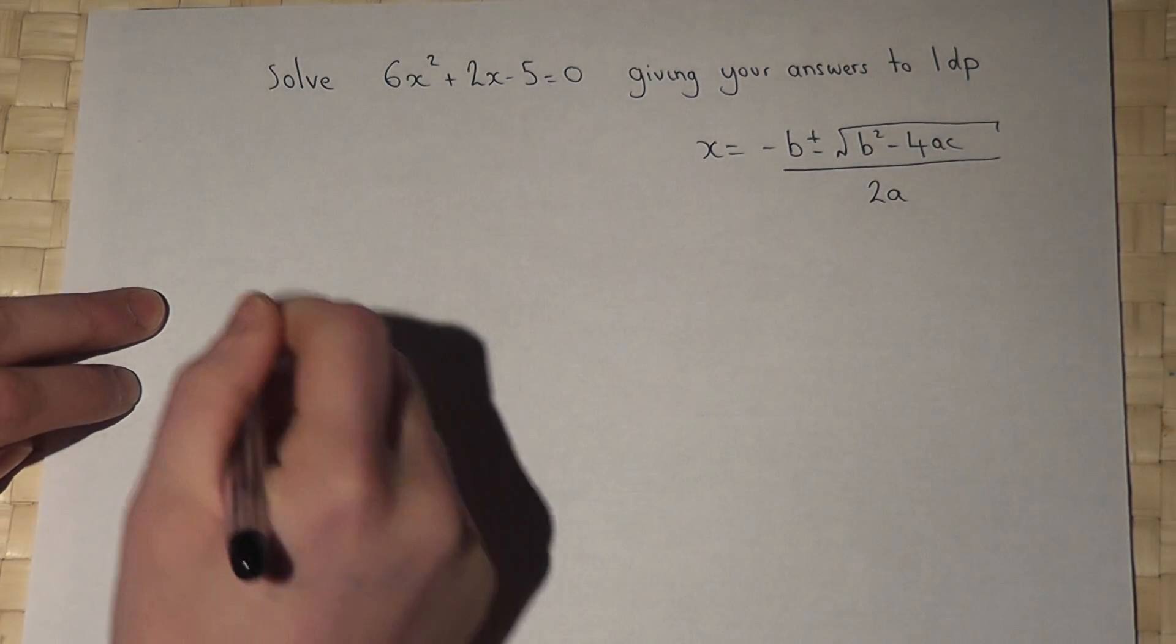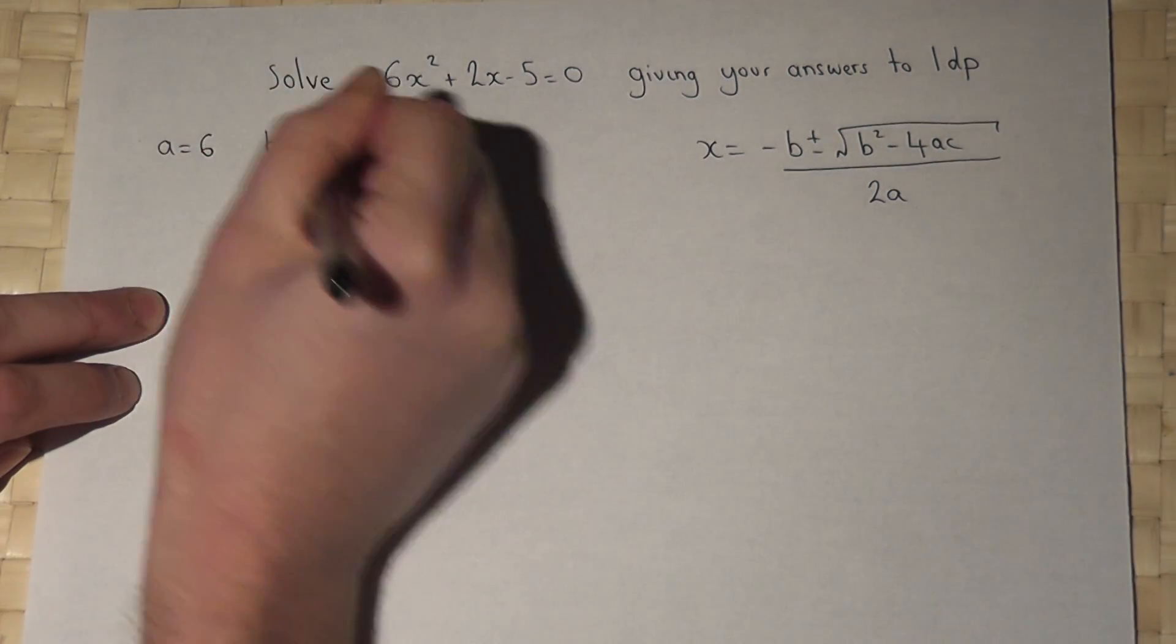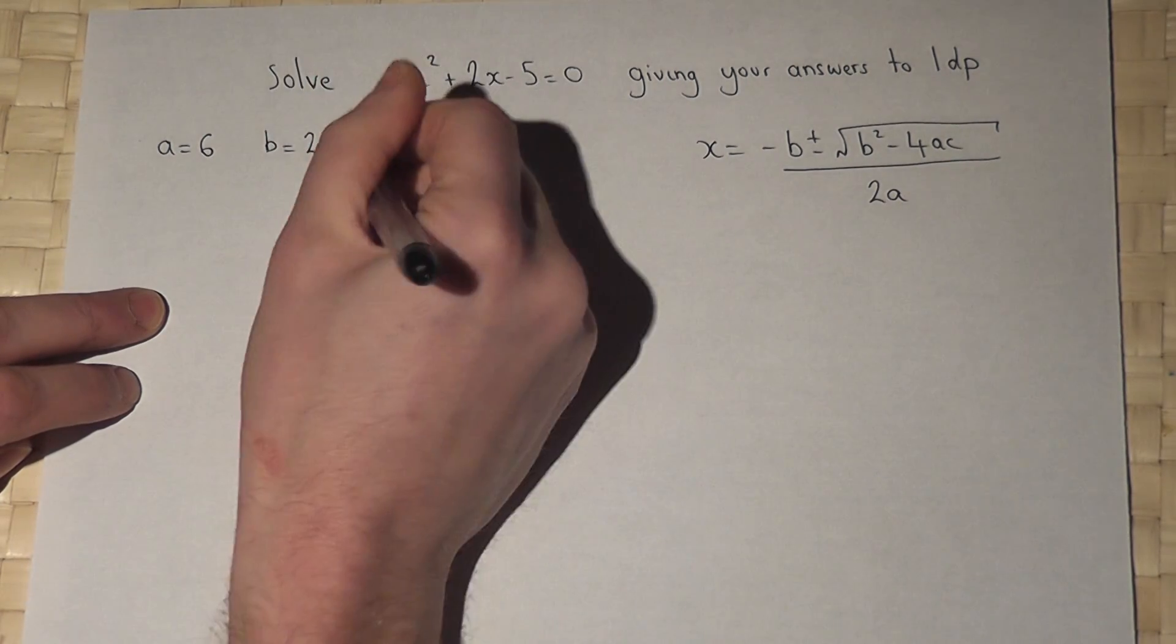Now, in our equation, a is the coefficient of x squared, so a is 6, b is the coefficient of x, and c is the constant.